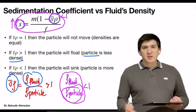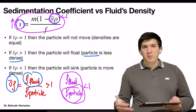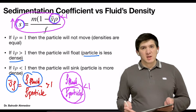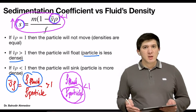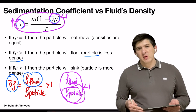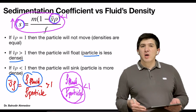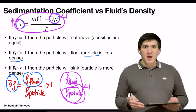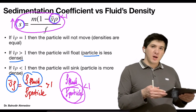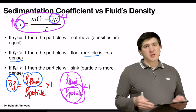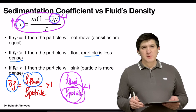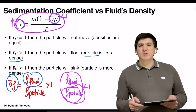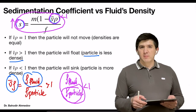This equation is really powerful — it tells you how particles are going to sediment to the bottom of the tube depending on their mass, density, shape, or the density of the fluid. This is essentially the sedimentation principles during centrifugation. In our next video lectures, we're going to talk about the applications of centrifugation and the separation of particles. Thank you very much for your attention. I hope this video was very helpful for you.